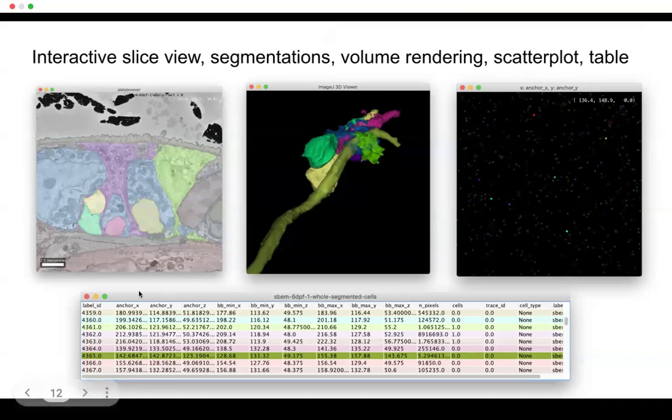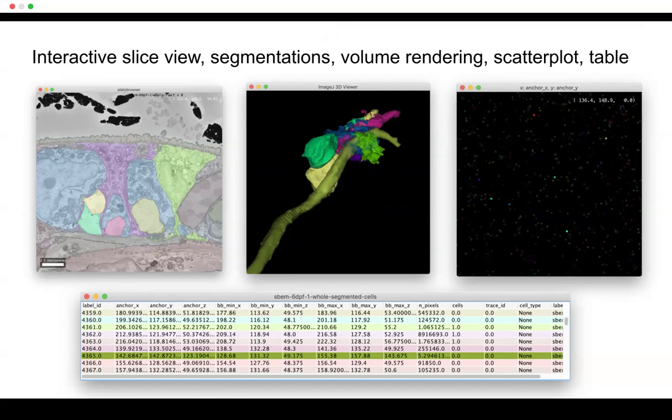Then another view we have is a so-called scatterplot view. So from the table, actually here, which for each row is one of these segments and you can have different measurements, morphological features or whatever, you can make a scatterplot and then see where they lie. So this is actually really useful if you want to learn, for example, about the morphology of the cells in your sample to have this way of visualization. And it's all linked. So if you click in the table, it would zoom in the different viewers on this particular cell and vice versa.